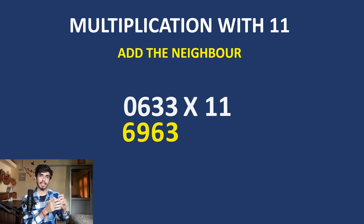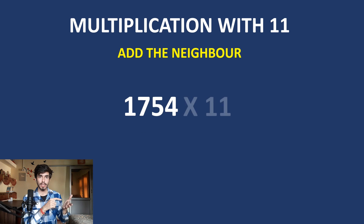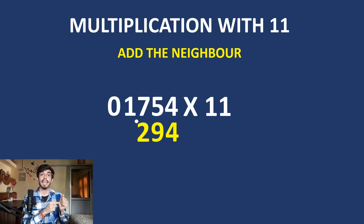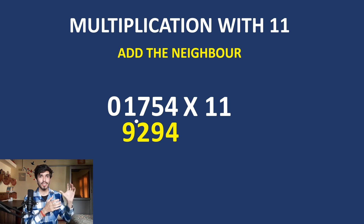Let us take an example with a carry. For the number: first digit gives 4, then 5 plus 4 is 9, then 7 plus 5 is 12 — write 2 and a dot for carry, then 1 plus 7 is 8, plus 1 from the carry is 9. That is the answer — this is how quickly you can calculate with 11 using Trachtenberg's system.